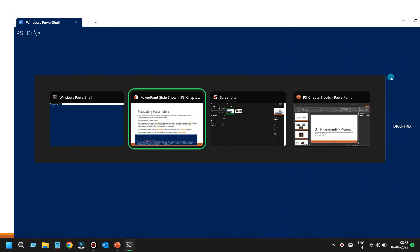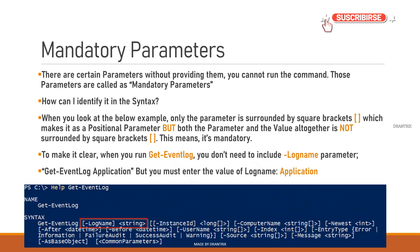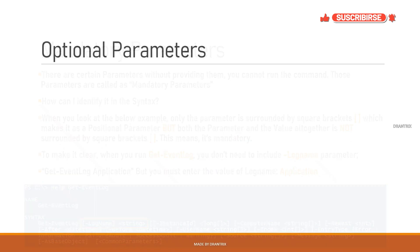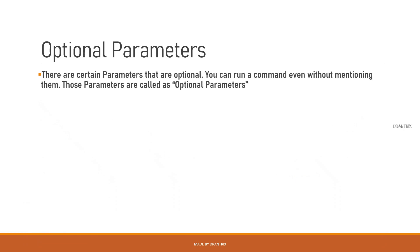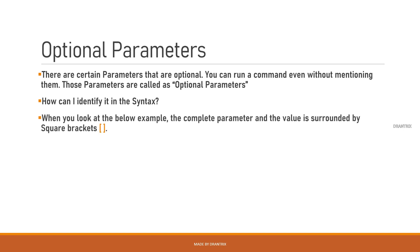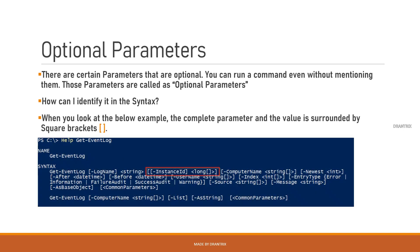I got the output. The next type is optional parameters — parameters you can run a command without mentioning at all. Looking at the Get-EventLog help, we examine the InstanceId parameter. Here both the parameter name and the value are covered with square brackets, which means it is optional.